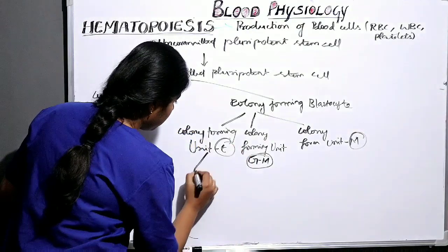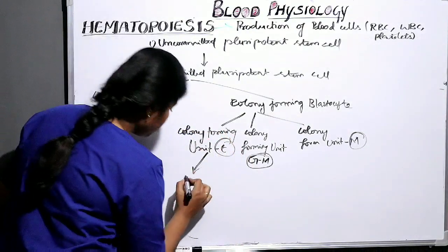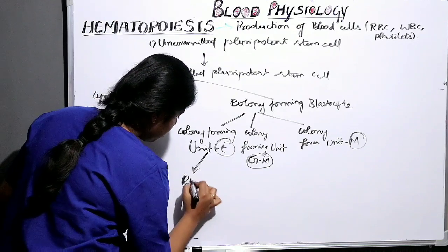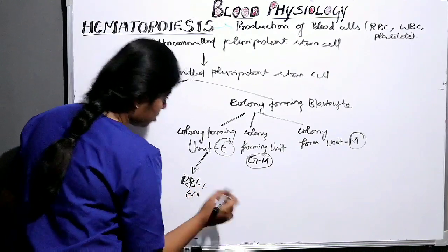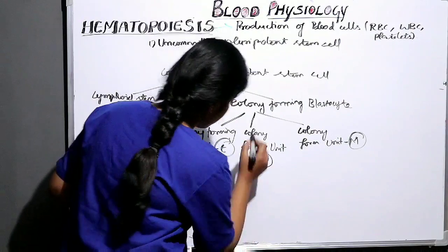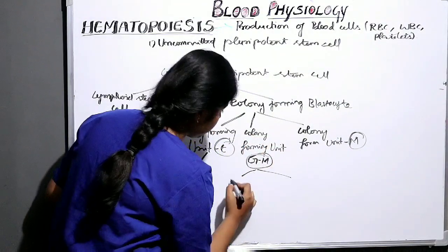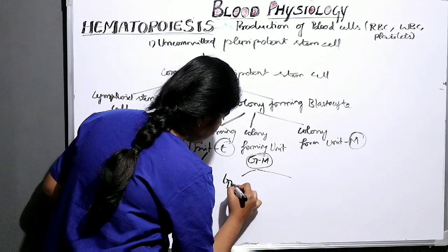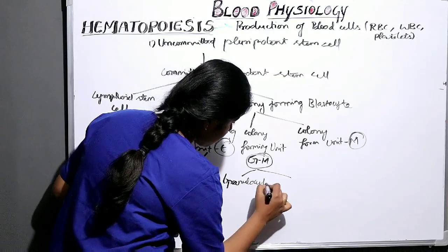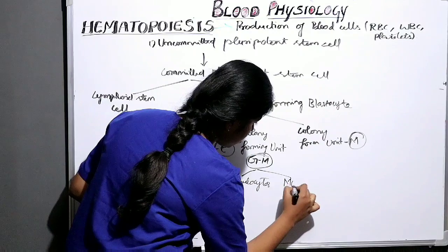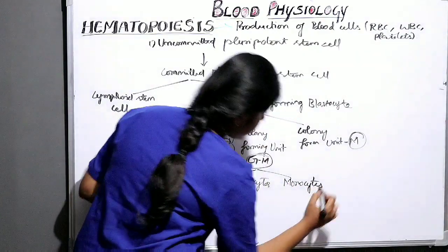Colony forming unit E gives rise to RBC or erythrocytes. Then, colony forming unit GM is further divided into two types: granulocytes and monocytes.